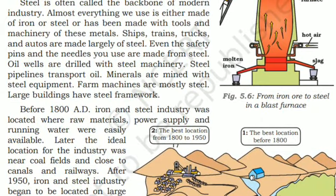Steel is often called the backbone of modern industry. Almost everything we use is either made of iron or steel, or has been made with tools and machinery of these metals. Ships, trains, trucks, and autos are made largely of steel. Even safety pins and needles are made from steel. Oil wells are drilled with steel machinery, steel pipelines transport oil, minerals are mined with steel equipment, farm machines are mostly steel, and large buildings have steel frameworks.